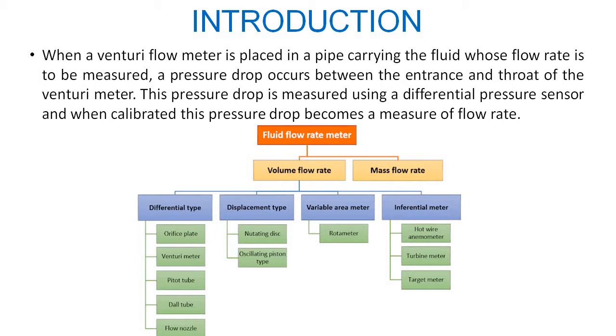And difference between that pressure can be calibrated in terms of flow. Flow meter broadly classified into two, that is volume flow rate and mass flow rate. We are not concentrated on mass flow rate, we are only focused on the volume flow rate. Volume flow rate is further classified into differential type, displacement type, variable area type and inferential meter.